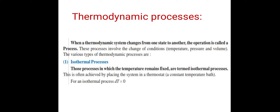There are various types of thermodynamic processes. The first one is the isothermal process. These are processes in which the temperature remains fixed. This is often achieved by placing the system in a thermostat — a constant temperature bath — in which there is no change in temperature.